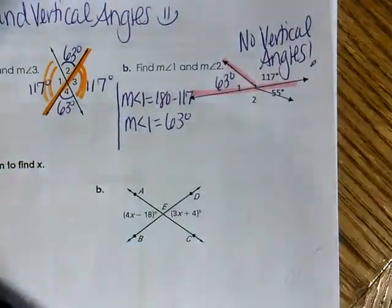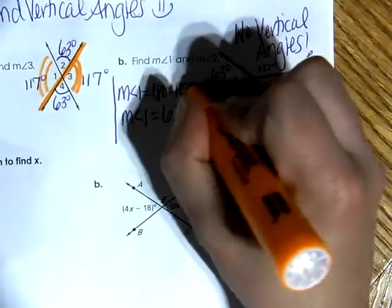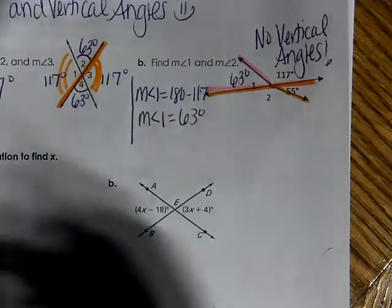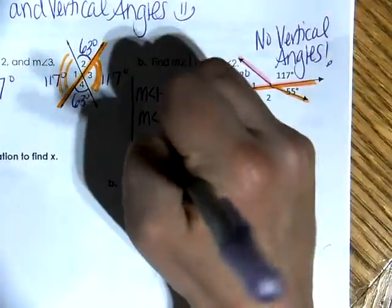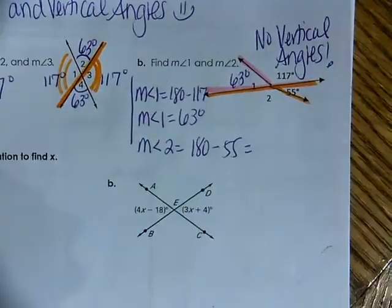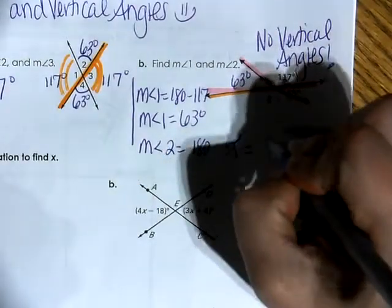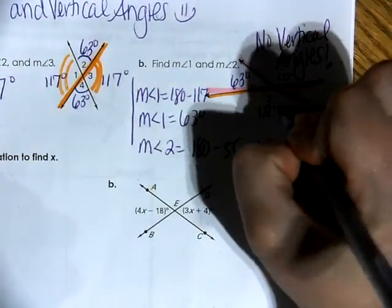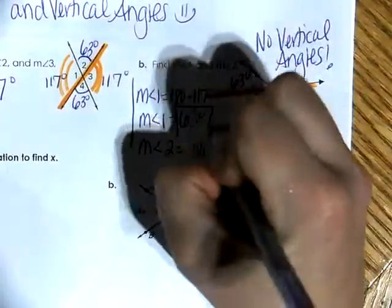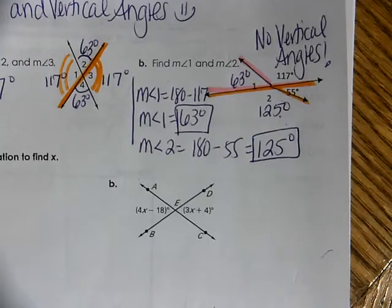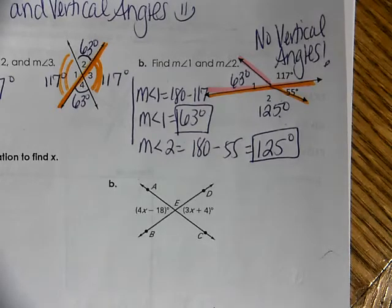Let's find the measure of angle two. The measure of angle two is also a linear pair, but it's a linear pair with 55 degrees. So the measure of angle two equals 180 minus 55, which is 125 degrees. And look at that — 125 and 117 are close to each other, but they're not congruent. So that once again proves that we do not have vertical angles in this picture.